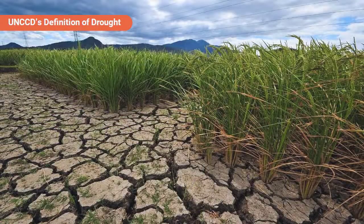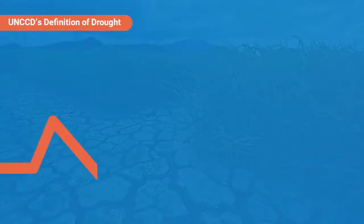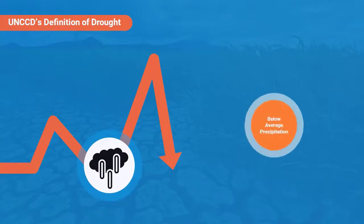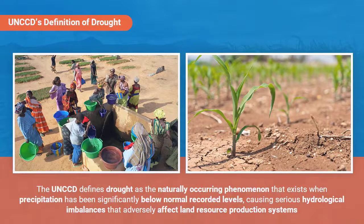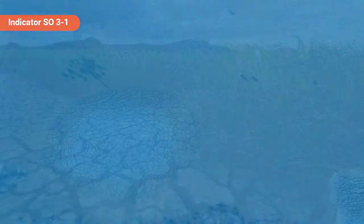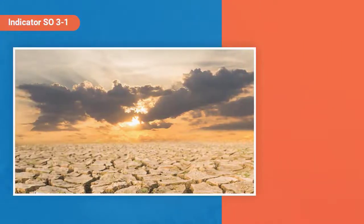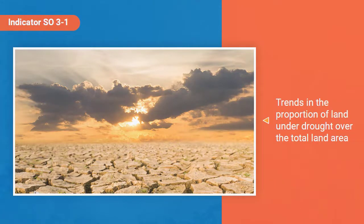Drought occurs when precipitation is significantly below average, long enough to cause serious hydrological imbalances that adversely affect land resource production systems. Indicator SO3.1 describes the status of meteorological drought hazards by identifying the proportion of land under drought using four meteorological drought intensity classes.